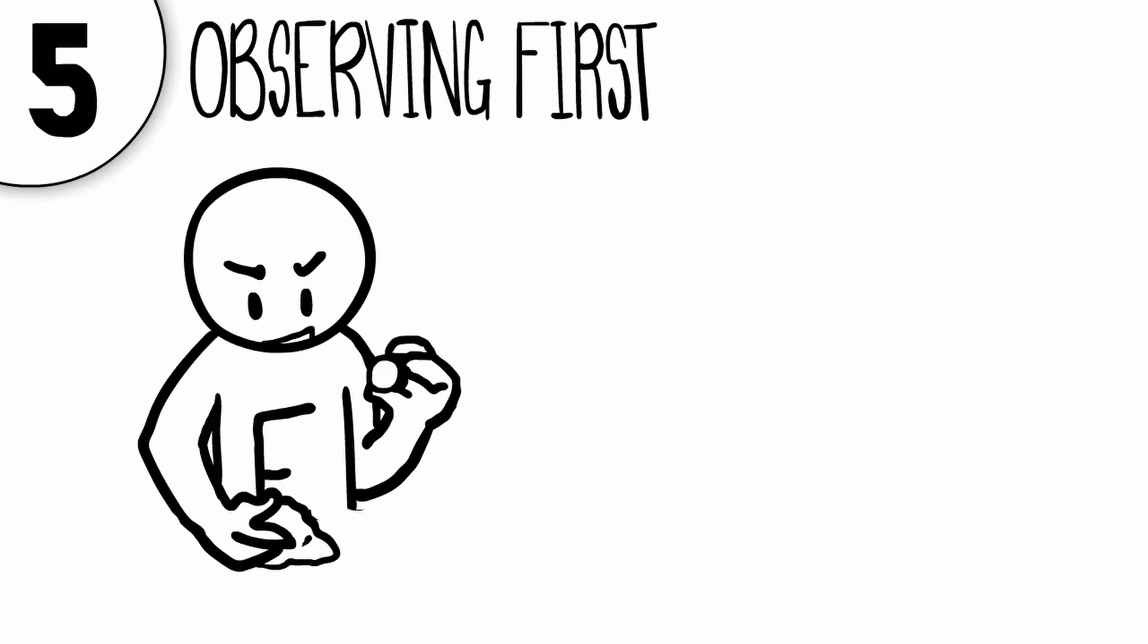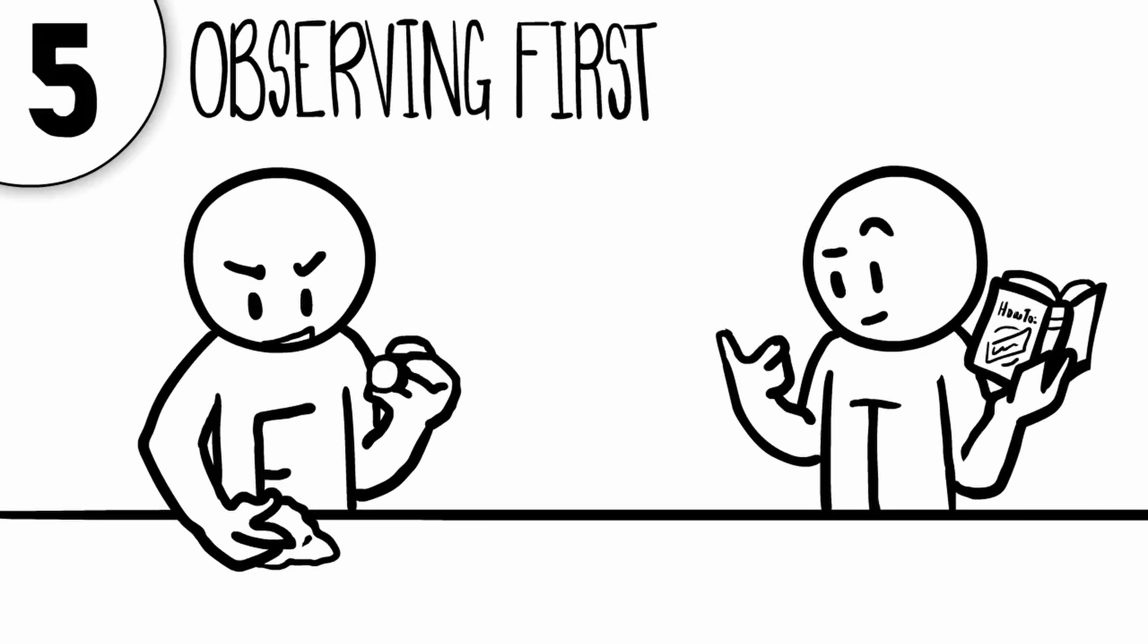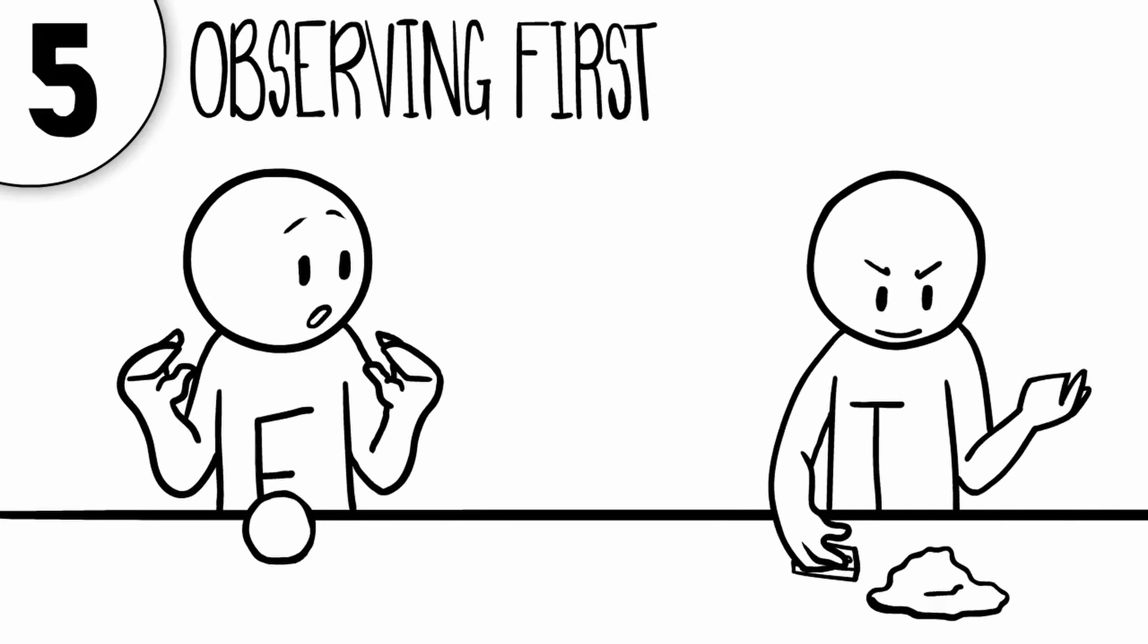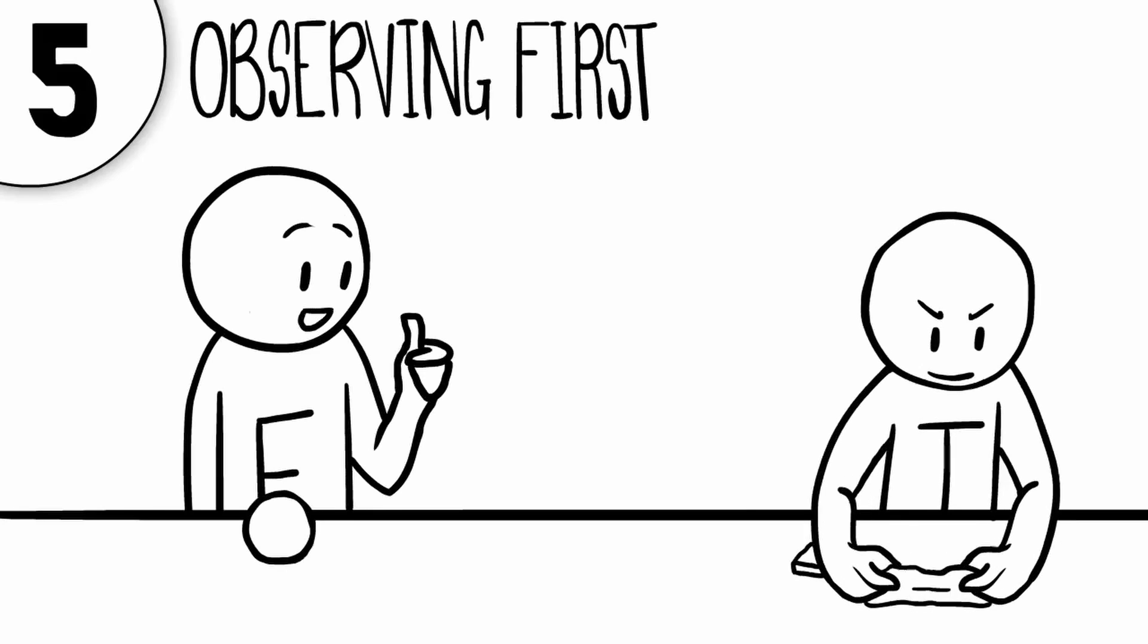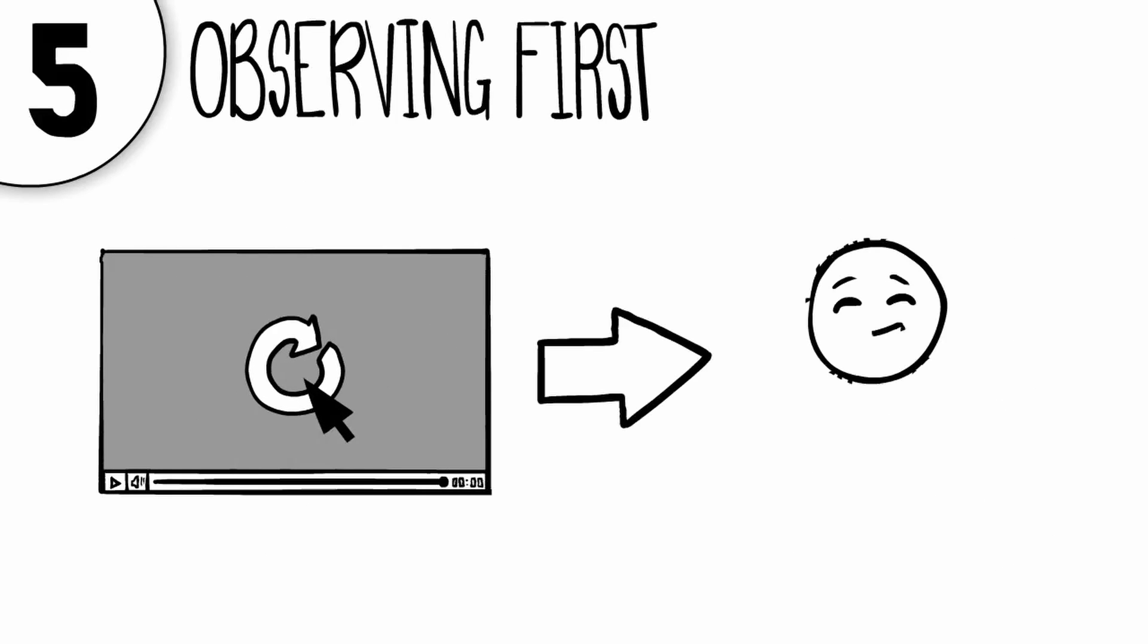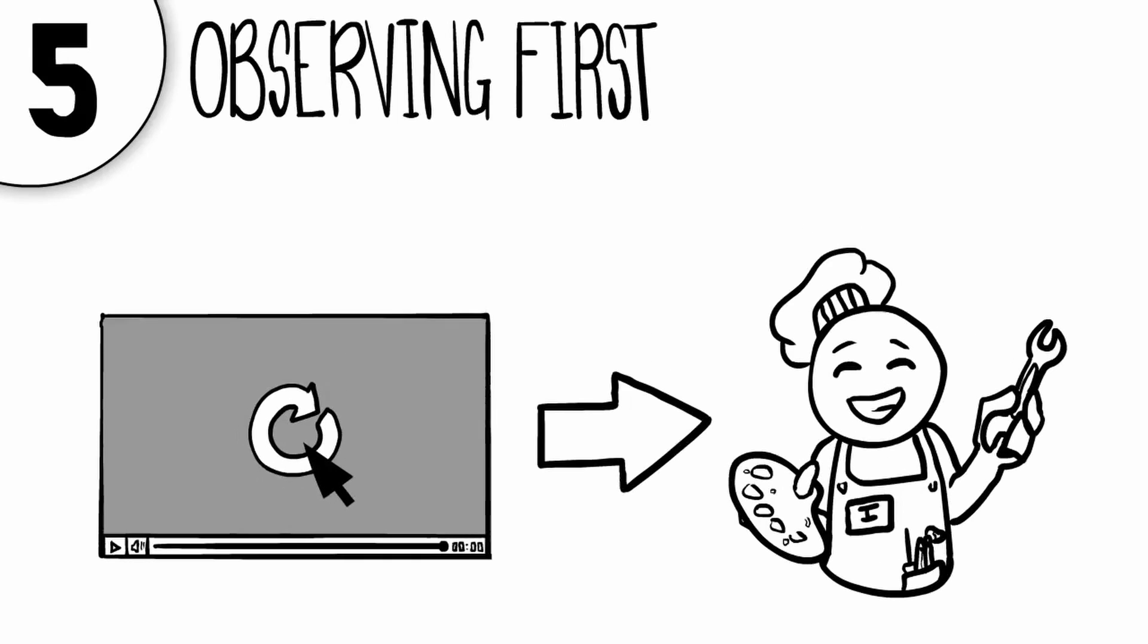Five: you have a habit of learning by observing first. Extroverts have a tendency to jump right in and learn as they go through hands-on experience. Introverts, however, prefer to observe first on the sidelines before getting involved in the same activity. They have a habit of watching a task being done repeatedly until they feel comfortable enough to mirror it.